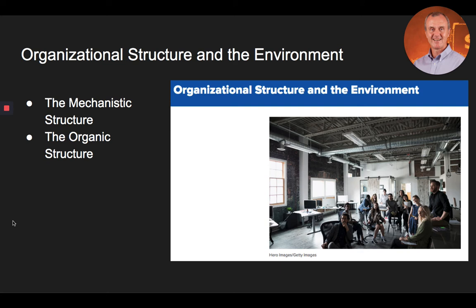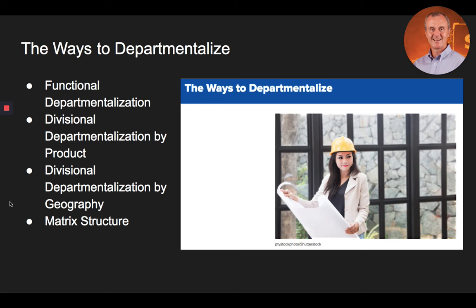In summary on the organizational structure and the environment, a mechanistic structure is designed to encourage employees to act in predictable, standardized ways and includes centralized decision-making at the top of the organization, high levels of formalization that result in many rules, and a clearly delineated chain of command extending over many levels in the organizational structure. An organic structure is designed to encourage flexibility and includes decentralized decision-making, low levels of formalization, and diverse and undefined tasks.